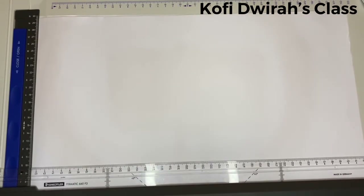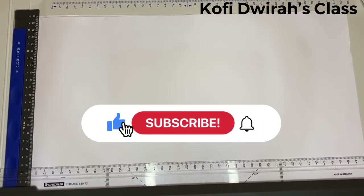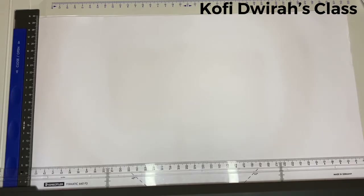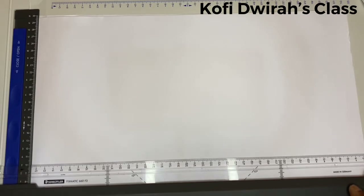Hello, welcome to my YouTube channel. Please don't forget to subscribe, share, and like this video. Today we are going to ascribe a circle to a triangle. First we have to draw a triangle, then we ascribe the circle to the triangle.